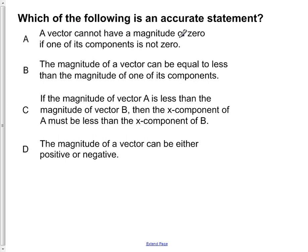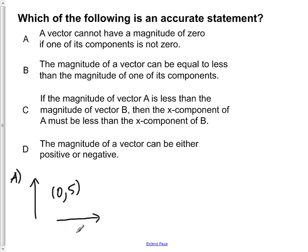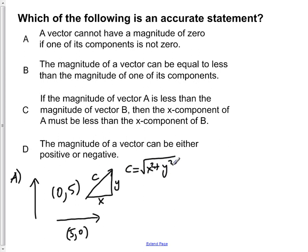Choice A says a vector cannot have a magnitude of zero if one of its components is not zero. If we have a vector pointing up in the y direction with components zero and five, then one of its components is zero but the magnitude of this vector is five. If we turn it on its side and give it components of five and zero, it still has a magnitude of five. The magnitude c is equal to the square root of x squared plus y squared. If one of these is zero, it simplifies to c equals the square root of x squared, which is just x.